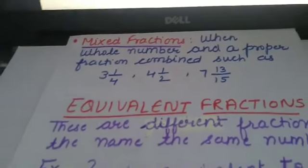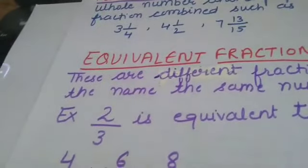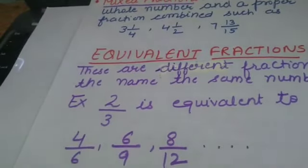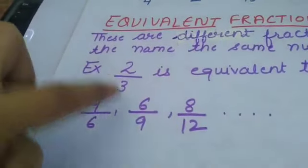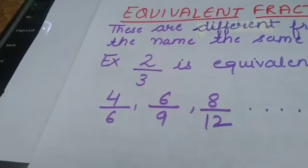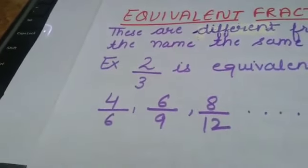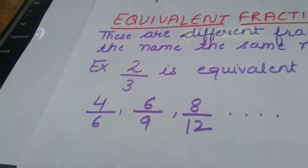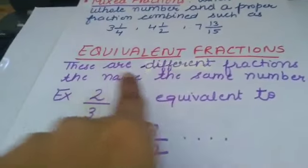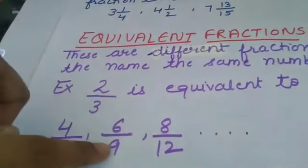Now one more topic: equivalent fractions. Sometimes fractions may look different and have different numbers, but they are equivalent — they have the same value. Suppose 2 by 3 is a fraction. It is equivalent to 4 by 6, 6 by 9, and 8 by 12. When you reduce them to simplest form, they become the same. These are equivalent fractions.